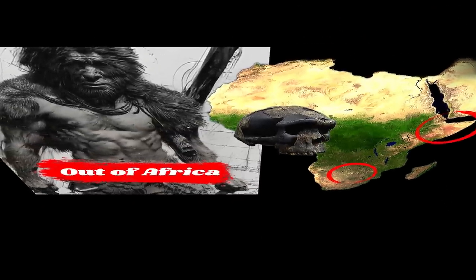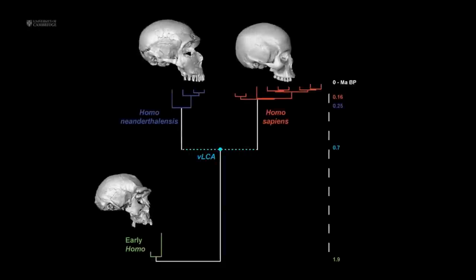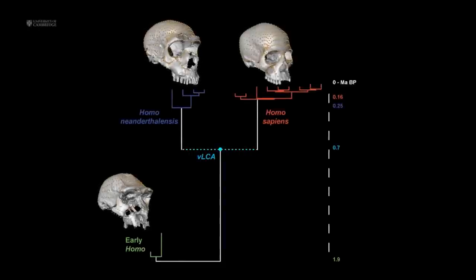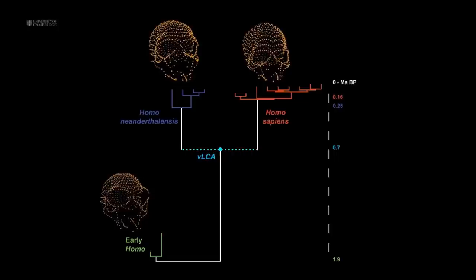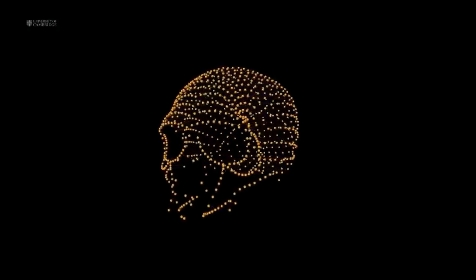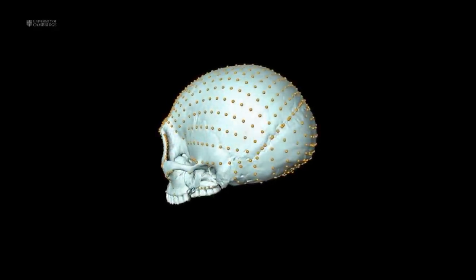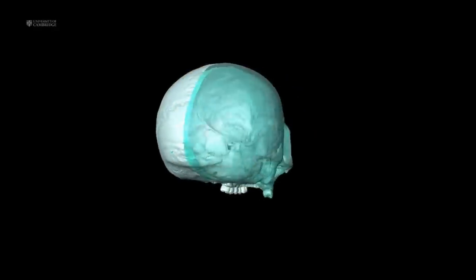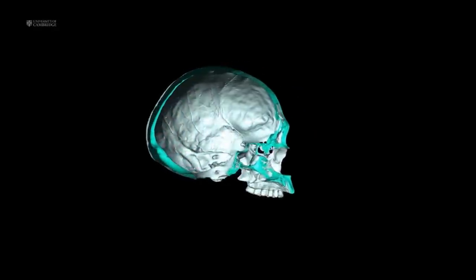Skul 5, for instance, has a projecting face and pronounced brow ridges. The brain case, in contrast, is quite rounded, distinct from that of Neanderthals, and resembles that of modern humans. It is unclear whether some early modern humans, like Skul 5, retained their more robust traits from earlier populations or were mixed ancestry individuals.